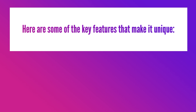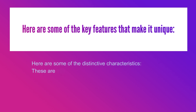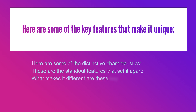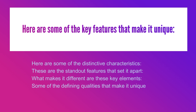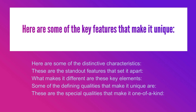Here are some of the key features that make it unique. You can also say: Here are some of the distinctive characteristics; These are the standout features that set it apart; What makes it different are these key elements; Some of the defining qualities that make it unique are; These are the special qualities that make it one of a kind.